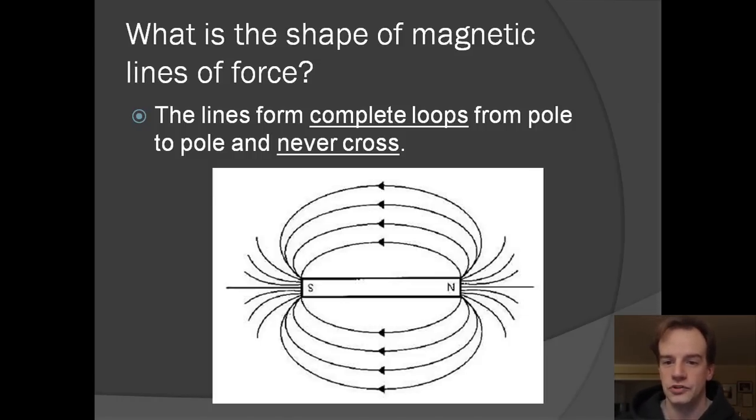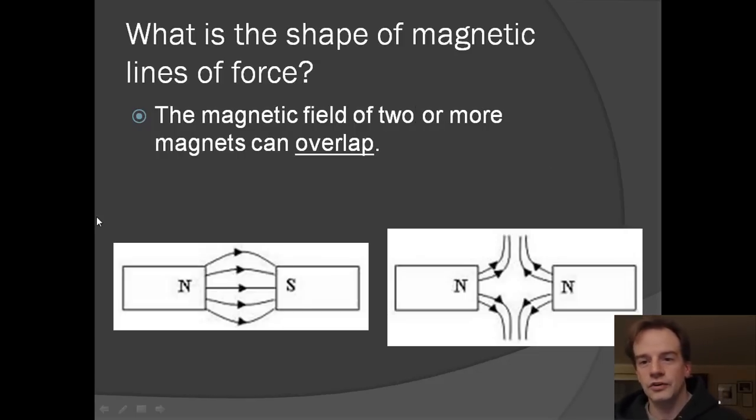So in this picture you can see that they come out from the ends where it's the strongest, and they never cross. They extend out into the area around the magnet. So the magnetic field of two or more magnets can overlap. We can see two opposite poles, a north and a south, connect together here. And over here two like poles, a north and a north, are repelling with the lines not crossing.